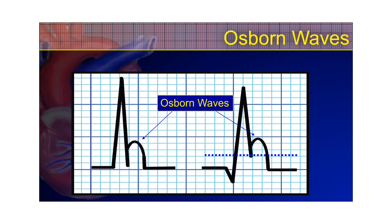Next, we're going to talk about Osborne waves, or J-waves. These occur in the presence of hypothermia. We don't use them to diagnose hypothermia — you're certainly going to want to use a thermometer to do that. However, if you have a hypothermic patient, it's good to know that you may see these, and they could make you think that the ST segment is elevated when in fact it's not.